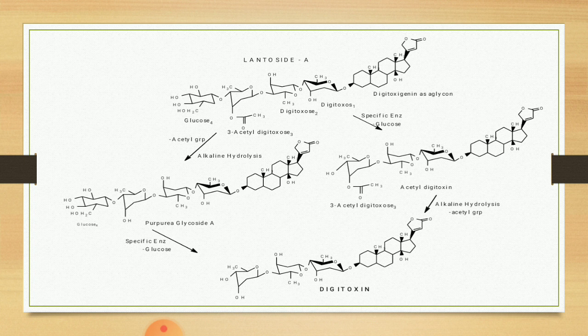Now let us see the same reaction in chemical form. The structure of lanatoside A contains digitoxigenin as the aglycon part, attached to digitoxose 1, attached to digitoxose 2, attached to digitoxose 3 with an acetyl group, with terminal glucose. On the right-side reaction, lanatoside A, by the specific enzyme which removes the glucose molecule, forms acetyl-digitoxin. This acetyl-digitoxin upon alkaline hydrolysis removes the acetyl group to form digitoxin.